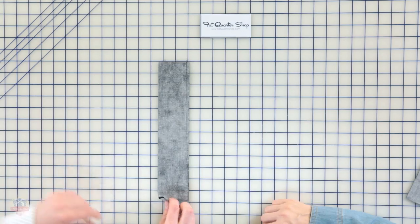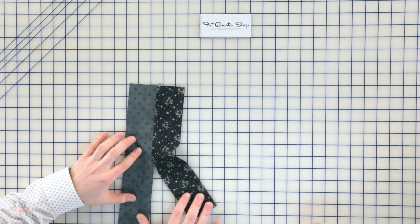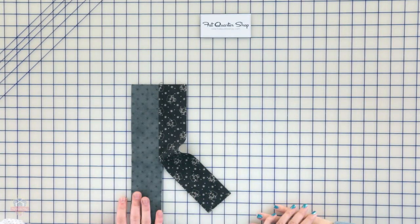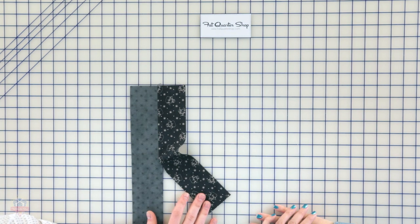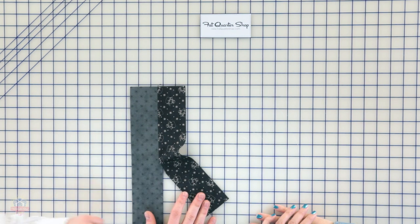That is gonna give us our partial seam. We're gonna have like two legs, if you want to say, and that is our partial seam unit that we're gonna work with.